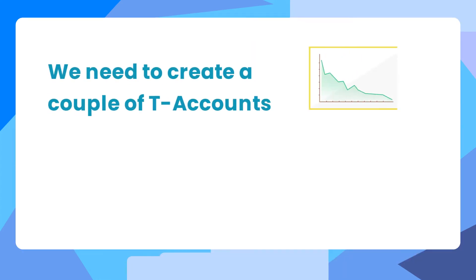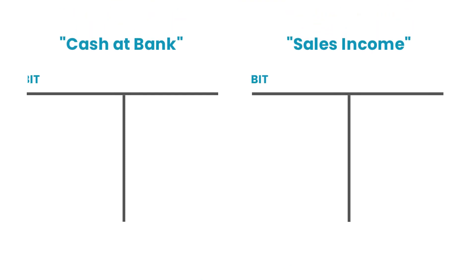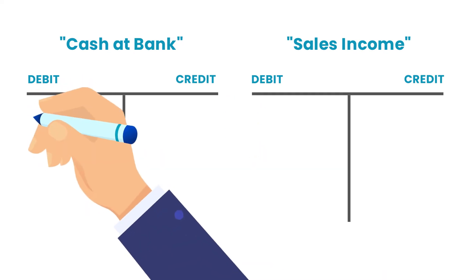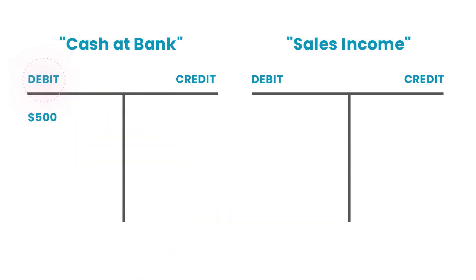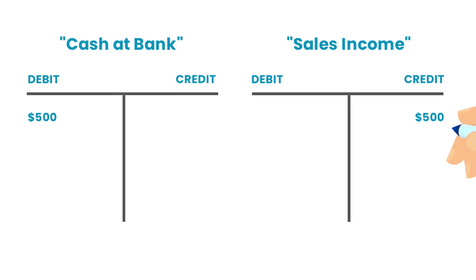First, we need to create a couple of T-accounts to represent the Cash at Bank and Sales Income General Ledger accounts. Let's draw the two T-accounts, name them, and label the debit and credit sides. Next, we need to take each part of the transaction and put the details into the T-accounts. Because you received $500 into your bank account, you need to enter $500 on the debit side of the Cash at Bank T-account. And because you earned that $500 for doing some work for a client, you need to enter $500 on the credit side of the Sales Income T-account.